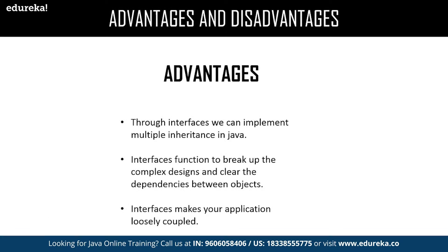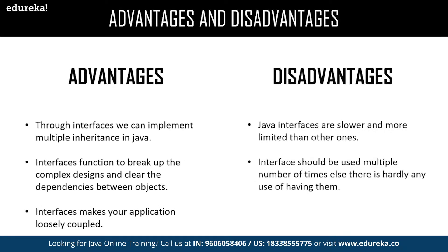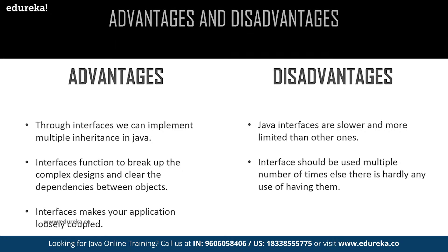The advantages are: we can achieve multiple inheritance in Java; we can easily break up complexity and enable clear dependency between objects; and we can achieve loosely coupled applications through an interface. The disadvantages include: Java interfaces make the application slower compared to competitors like Python which support multiple inheritance directly; and once an interface is included in an application, it might be used once in a while or end up being used multiple times at a larger scale.